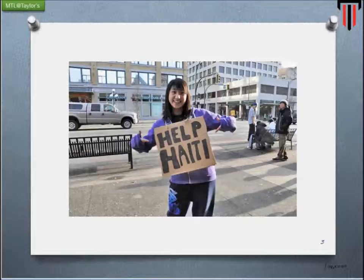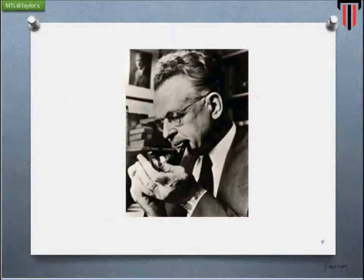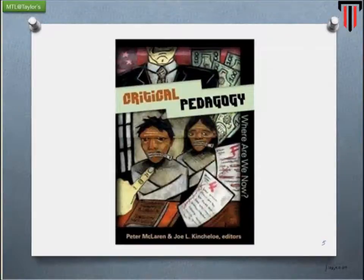Another proponent of Reconstructivism is George Count, who in 1932 gave a speech called 'Dare the School to Build a New Social Order,' suggesting that schools become an agent of social change and social reform. Students cannot afford to be neutral but must take a position in society. Most advocates for Reconstructivism are sensitive to race, gender, ethnicity, and differences in socioeconomic status.